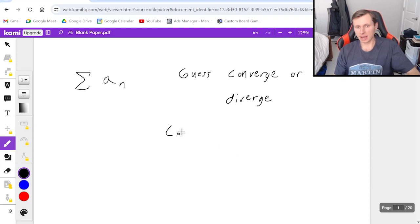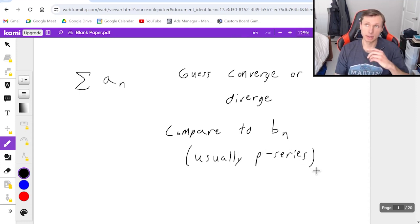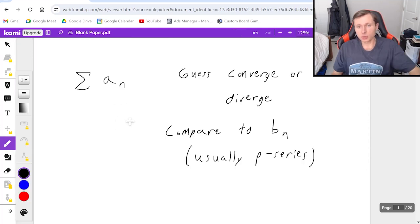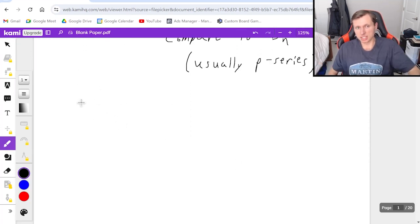Then we want to compare our series to some other series, b sub n, which is usually going to be a p series, because p series are the easiest ones to use for limit comparison test and direct comparison test. And whatever series you're comparing to has to do the same thing as your guess. In other words, if you choose converge, you have to choose a p series that converges, for instance.